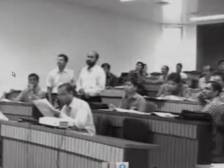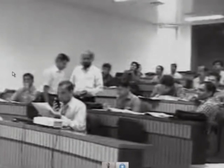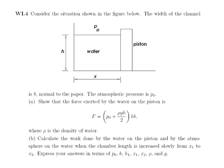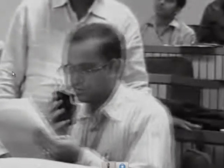Hello Nirma, do you have any questions? Hello sir, in exercise number four, part b — calculate the work done by the water on the piston and by the atmosphere on the water, when the chamber length is increased slowly from x1 to x2 — I think the height h should also vary when you increase the water length from x1 to x2. So you have to assume that the height is reduced from x2 to h1?